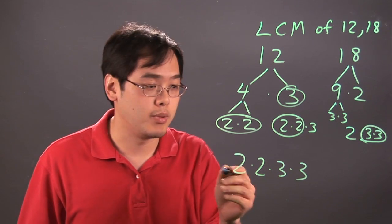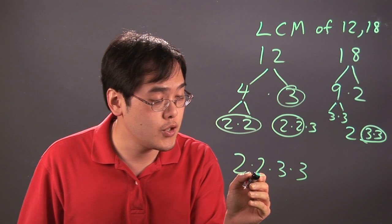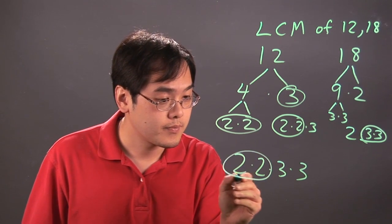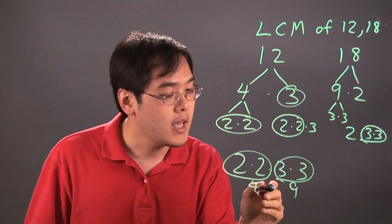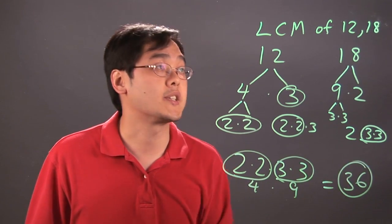And then you multiply what you have from here, and that's going to be the LCM. 2 times 2 is 4, 3 times 3 is 9, and 4 times 9 is going to be 36, which is going to give you the least common multiple.